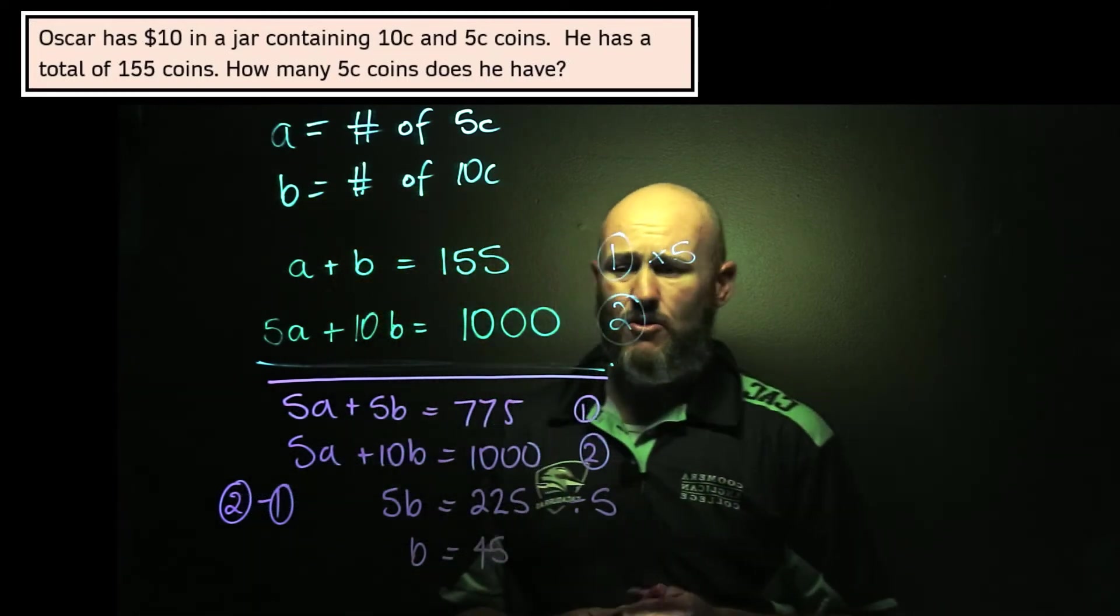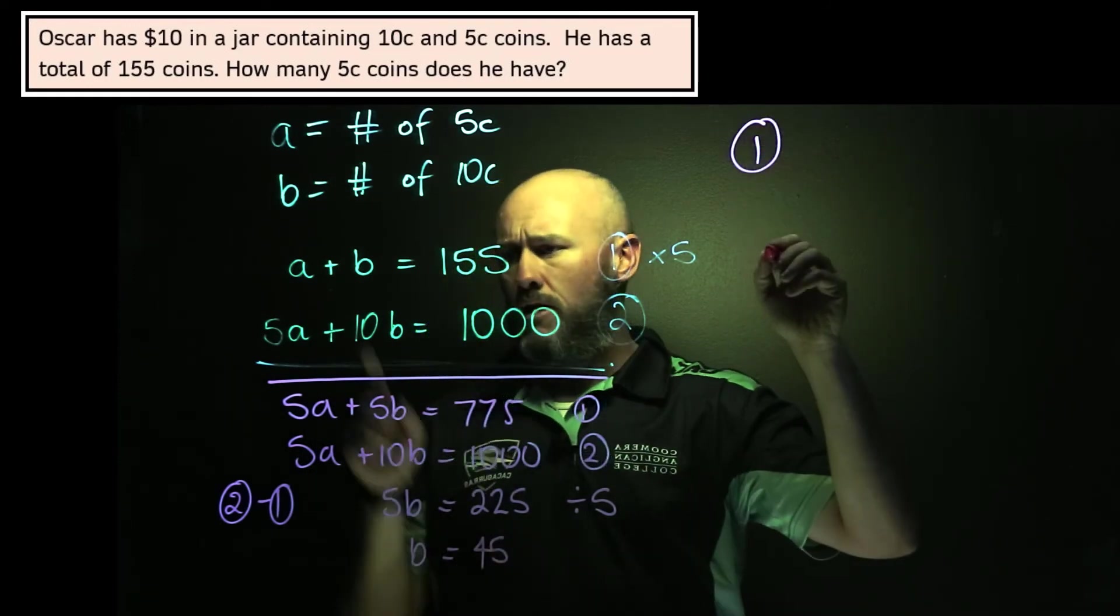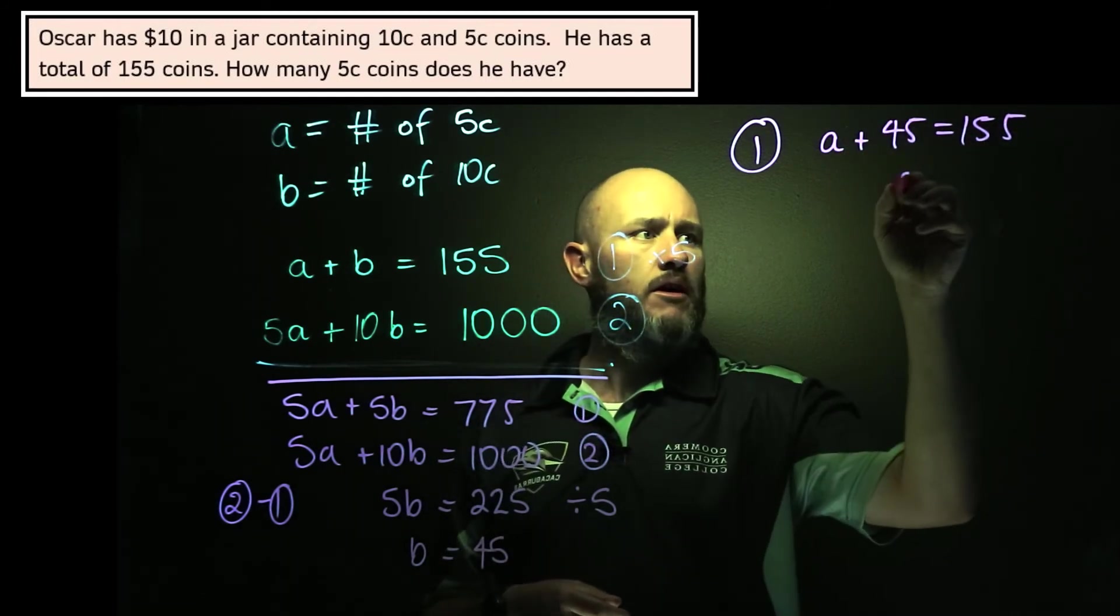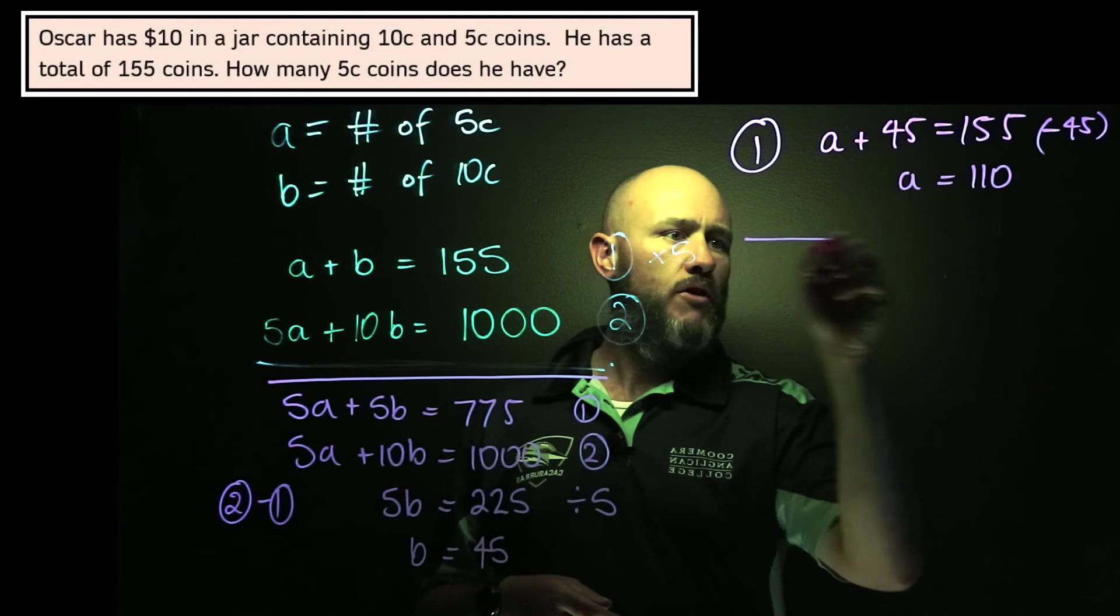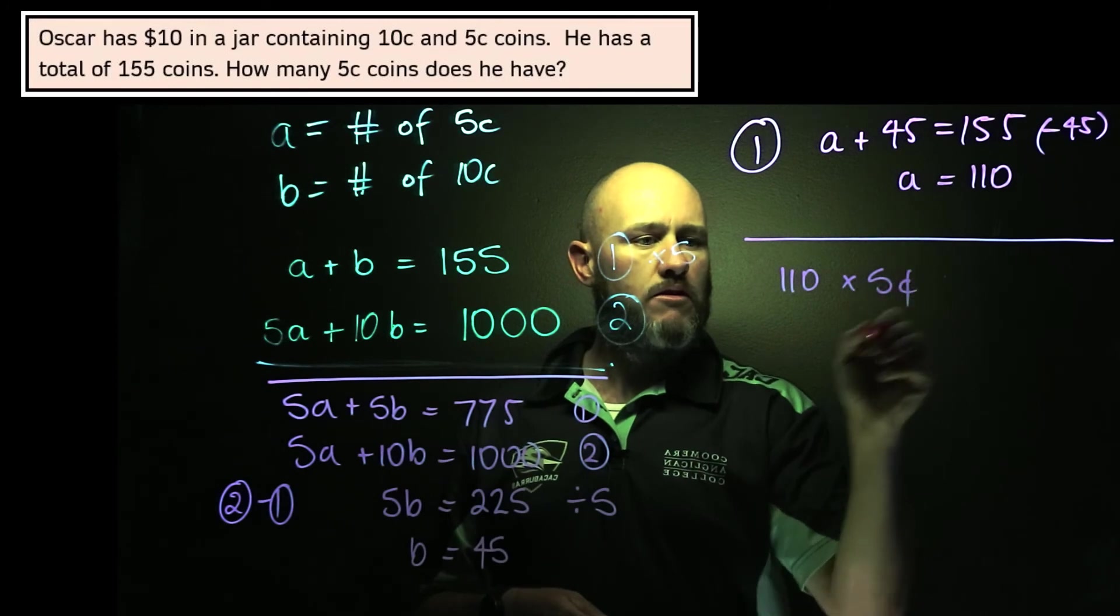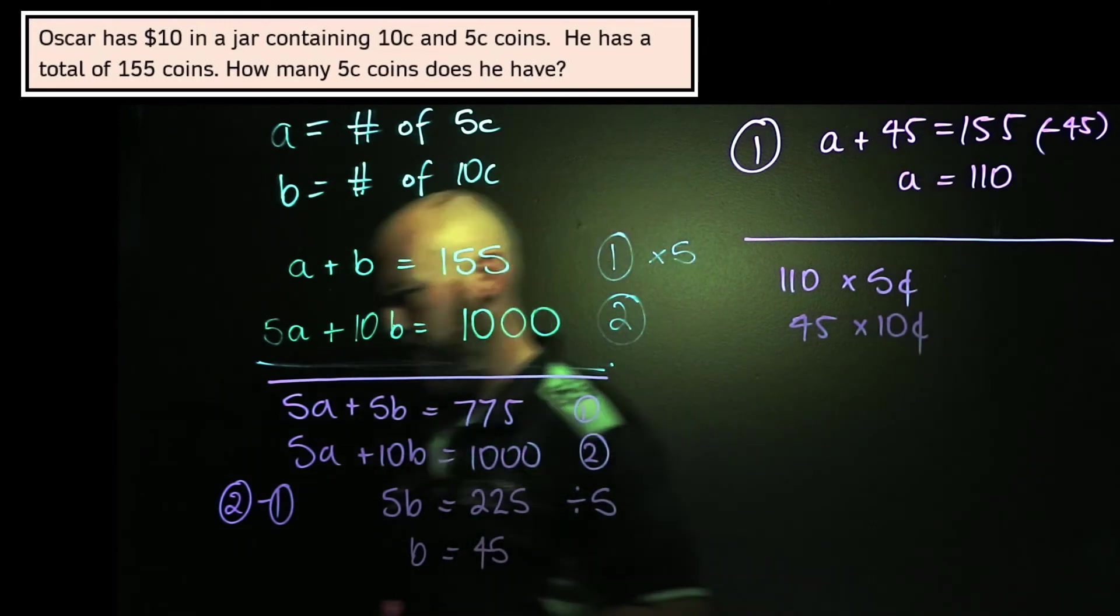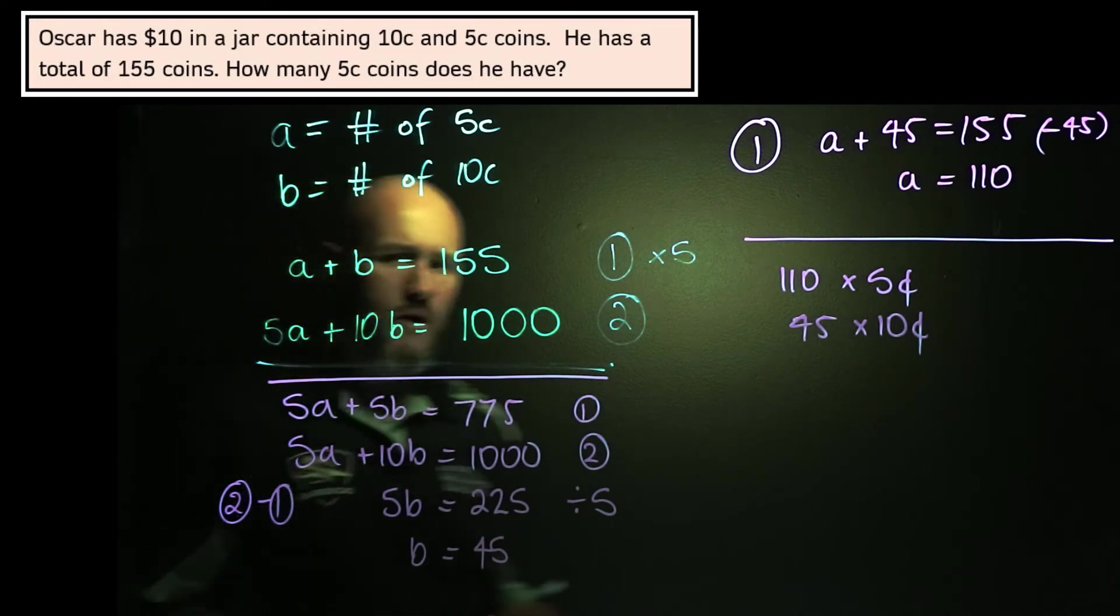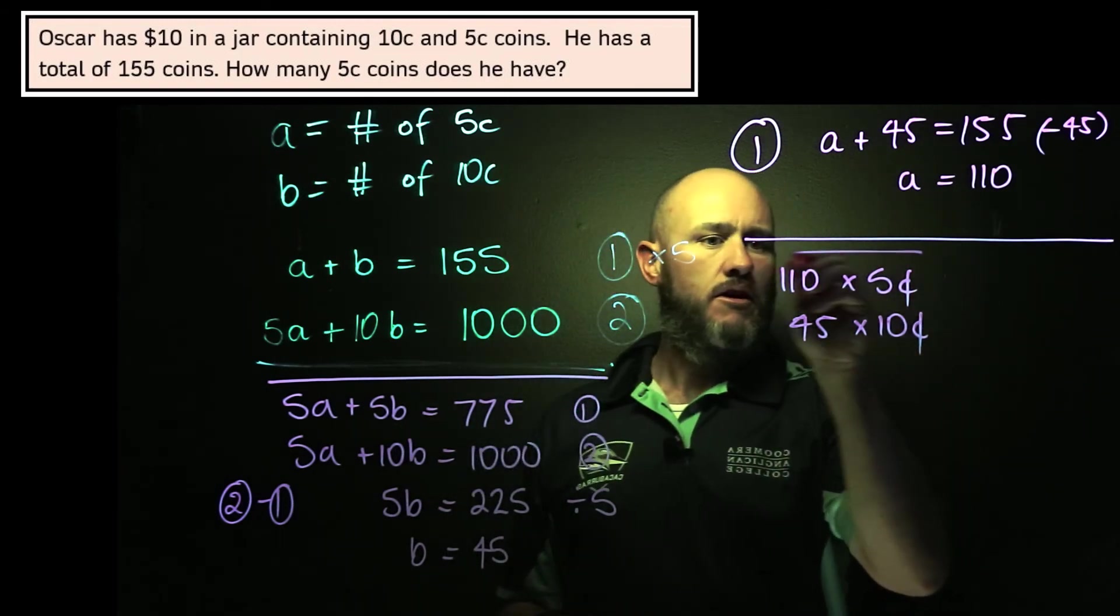We can quickly work out how many 5-cent coins there are by using equation 1 here. I've got equation 1. A plus B equals 155 gives me A plus 45 equals 155. And therefore A is equal to 110. Subtract 45 on both sides. So my final answer here is that I have 110 5-cent coins and 45 10-cent coins. And I'll quickly read the question again, and it comes out with this as the important part of my answer.